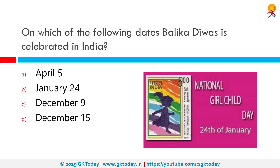On which of the following dates is Balika Divas celebrated in India? Correct answer is January 24th. National Girl Child Day is celebrated every year on 24th January as a national observance day for the girl child. This is to increase awareness about the necessity of girls' rights in society. Various political and community leaders speak to the public about girls' rights for equal education and fundamental freedoms.